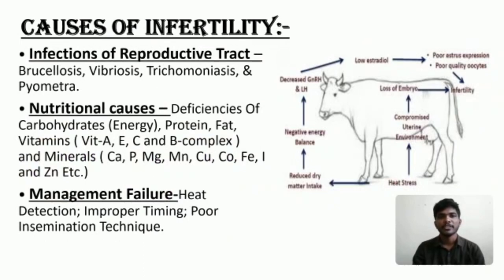Infections of the reproductive tract can cause brucellosis, vibriosis, trichomoniasis, and perimetritis.